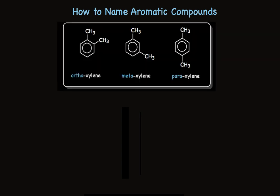We've looked at monosubstituted benzenes — now let's look at some disubstituted benzenes. There are two ways to name these: we can use common names with the ortho, meta, and para relationships, which are used when we have two substituents on the benzene ring. We can use numbers, but almost always we use the ortho, meta, and para designations.